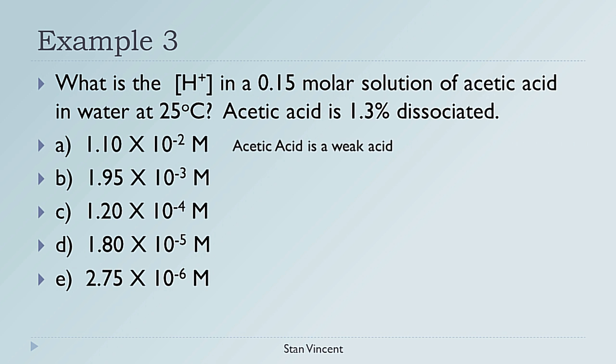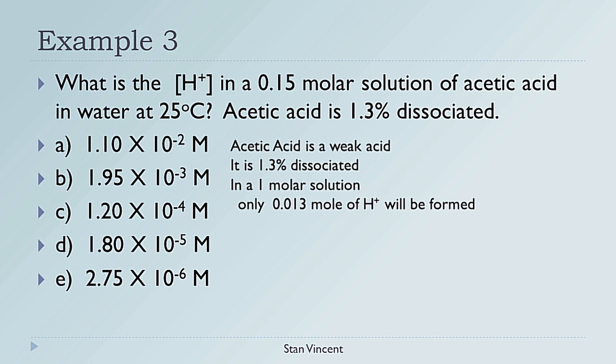Acetic acid is a weak acid; it is only 1.3 percent dissociated. So if you take a 1 molar solution of acetic acid, the actual concentration of the hydrogen ions is 1 × 1.3/100 because it is 1.3 percent dissociated, or it will produce 0.013 moles of hydrogen ions in 1 liter.